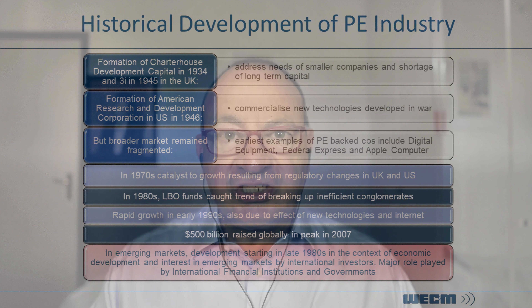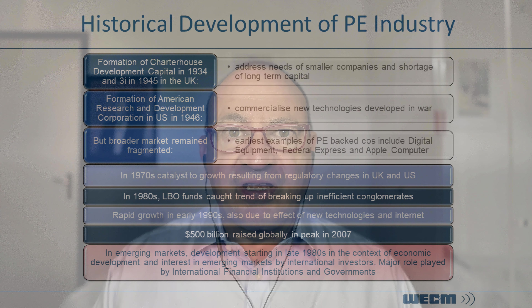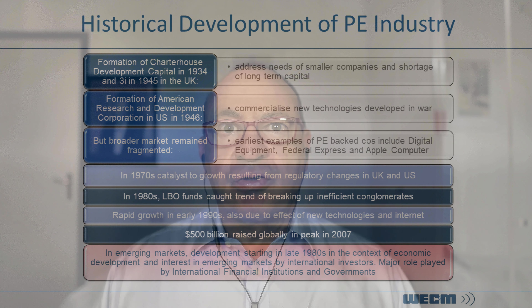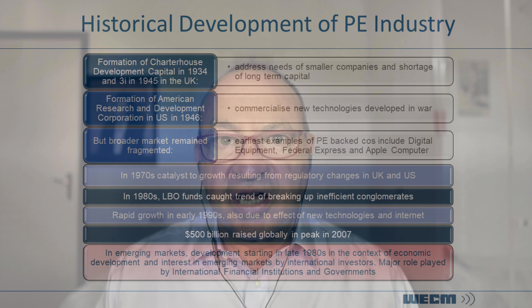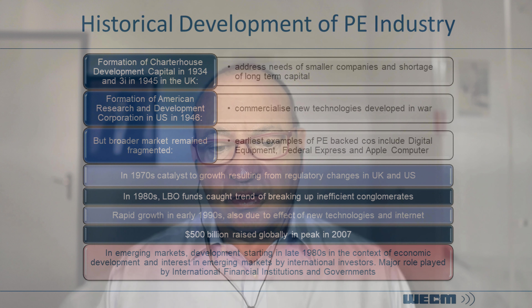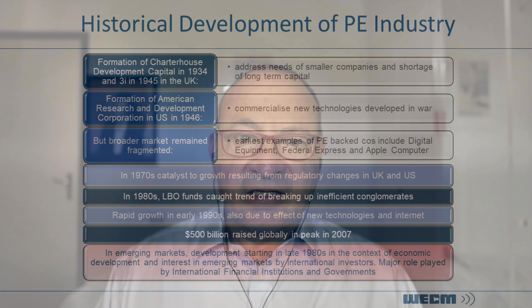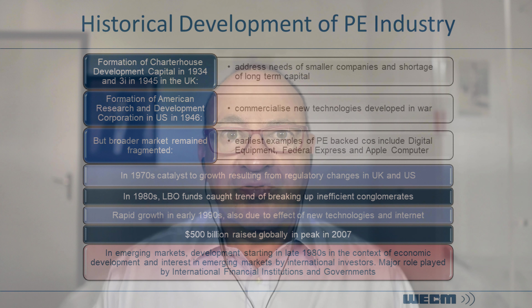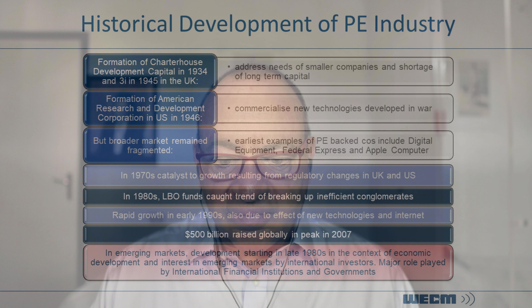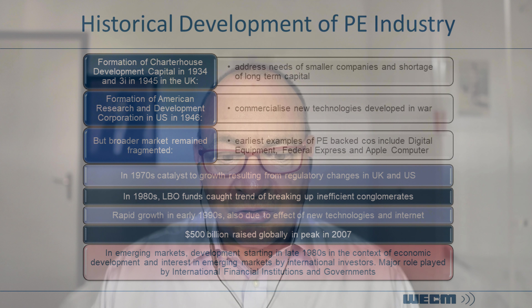In Europe, most private equity came from the UK, mostly through buyouts but also through institutions like CDC and 3i, which were formed after the Second World War to provide finance to SMEs. The market started growing strongly in the 1980s with leveraged buyouts in the US, then further in the 1990s with the internet boom and mobile phones. There was a reset in 2000 when the internet bubble burst, then the financial crisis of 2009, which affected private equity but from which it recovered fairly well. Now we have the COVID reality and private equity is feeling its effects.